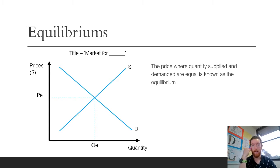Equilibriums: the price where quantity supplied and demand is equal is known as the equilibrium price. As you can see in the diagram we've drawn supply and demand on the same axes and this is the equilibrium right in the middle here. At this point whatever price that is, is the equilibrium price and that is the equilibrium quantity.